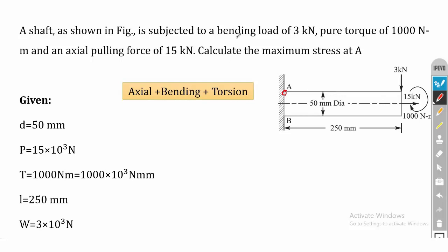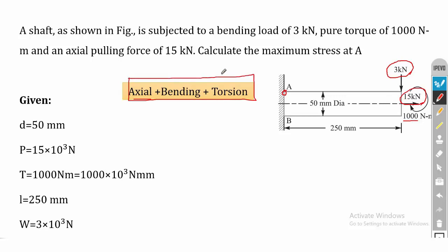From the problem, it is clear that three stresses are acting in this shaft: axial stress due to the 15 kilo Newton load, torque of 1000 Newton meter, and a bending load of 3 kilo Newton. This is a cantilever beam subjected to axial load, bending, and torsion — a special case where we have to combinedly use case 1 as well as case 2. First we will write the given data.